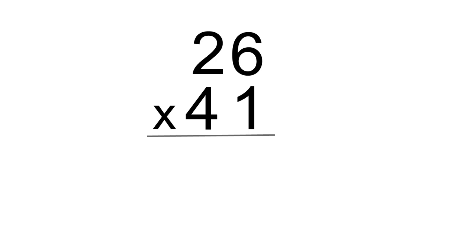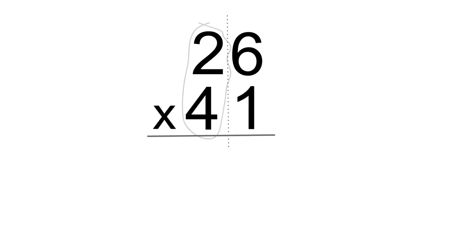When working out the answer on paper, it's important to keep the numbers aligned in their relevant columns. In this example, we are multiplying two-digit numbers, so each number has a units digit and a tens digit. The 6 in 26 and the 1 in 41 are in the units column, and the 2 in 26 and the 4 in 41 are in the tens column. Keep the digits in their relevant columns, as it's easy to get muddled up if the numbers are written in a messy way.